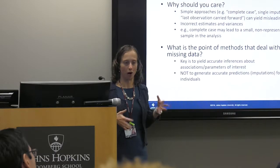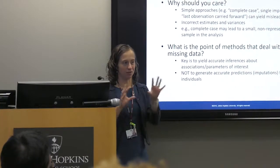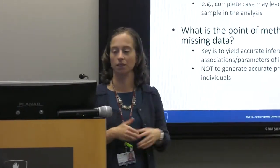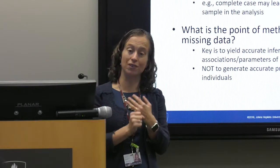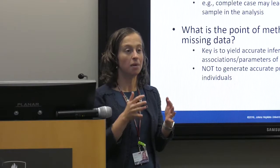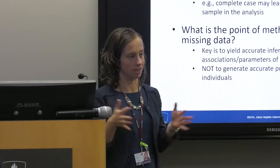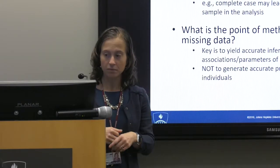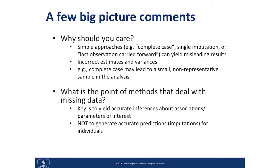The basic simple approaches will in general lead to incorrect results. That can mean incorrect point estimates but also incorrect standard errors and resulting inferences. So you have to think about it both from a bias perspective and a variance perspective. One problem with complete case analysis — where you drop anyone missing any variables — is you end up with a much smaller analysis sample that may not be reflective of the group you actually care about.